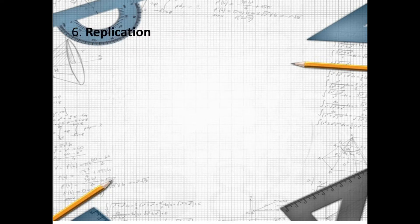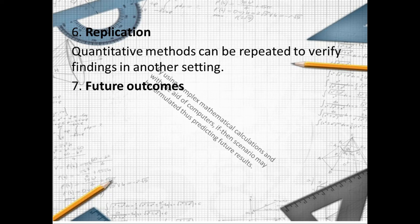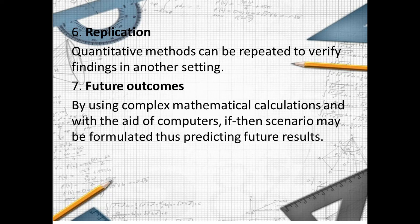Number six, quantitative research is replicable. Methods can be repeated to verify findings in other settings. Number seven, future outcomes can be predicted by using complex mathematical calculations — also known as statistical tools — and with the aid of computers, future results may be formulated and predicted.